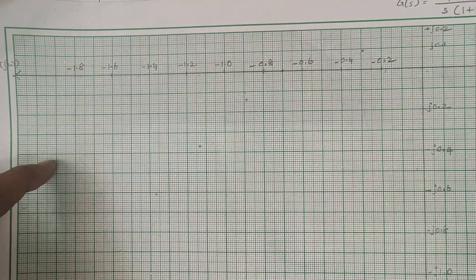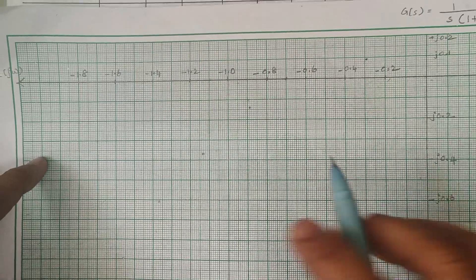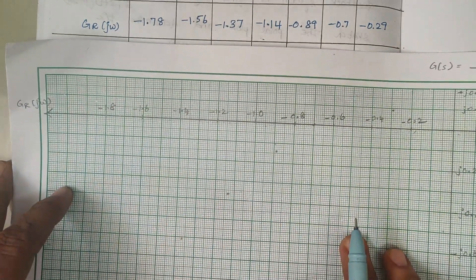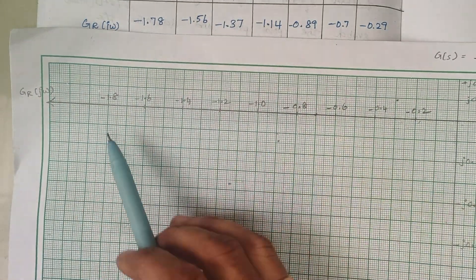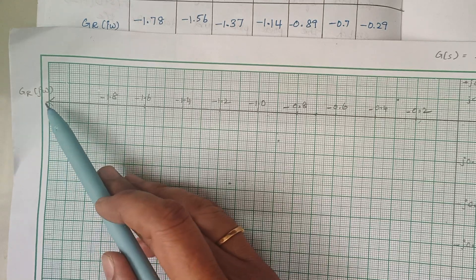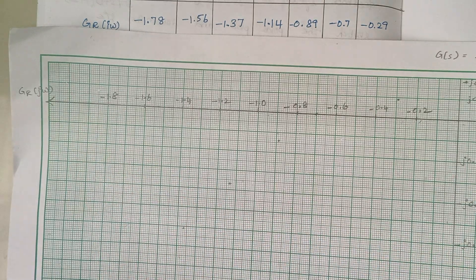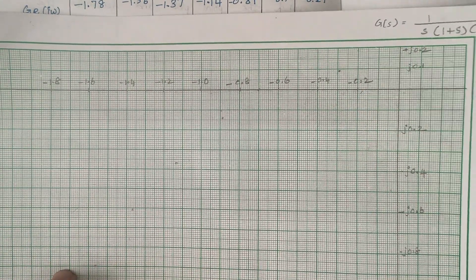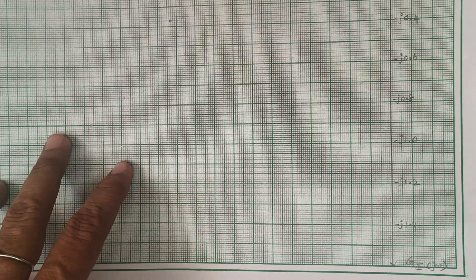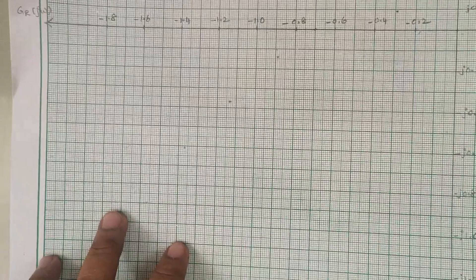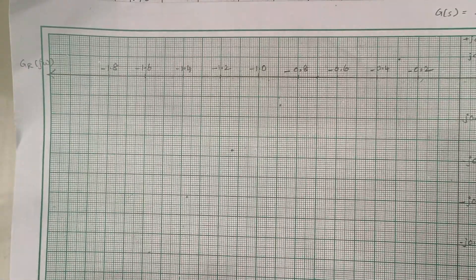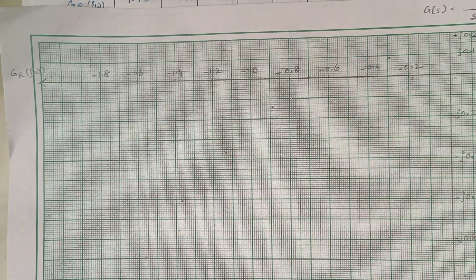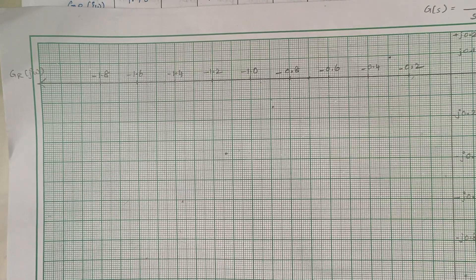Now let me show you how to draw these values on a graph sheet. On the graph sheet, the x-axis stands for the real term, written as G of j omega (real part), and the y-axis stands for the imaginary term, written as G_i of j omega. After drawing these two axes, we take the scale depending upon the values available in our table, and then plot the points.